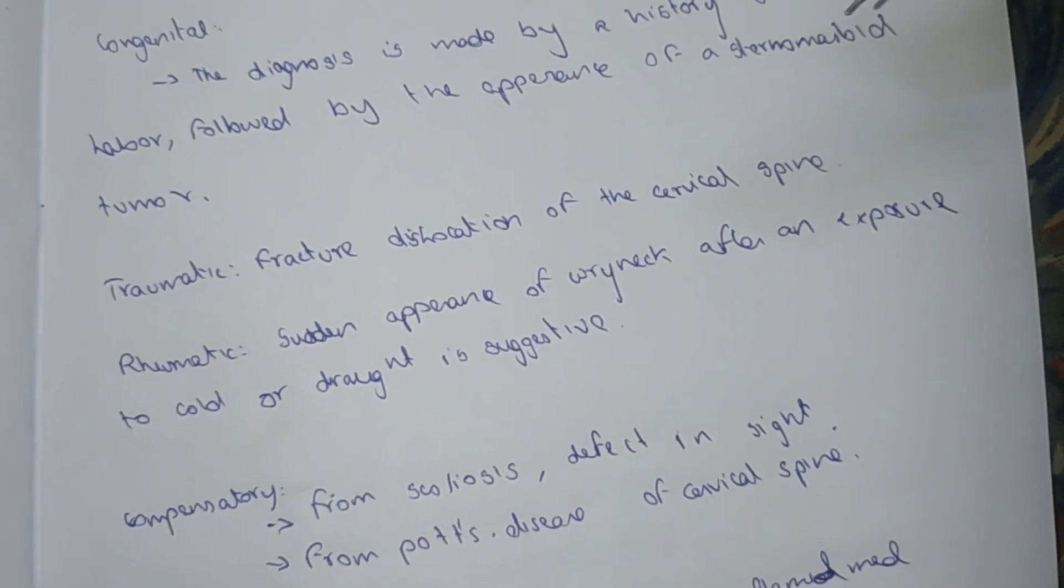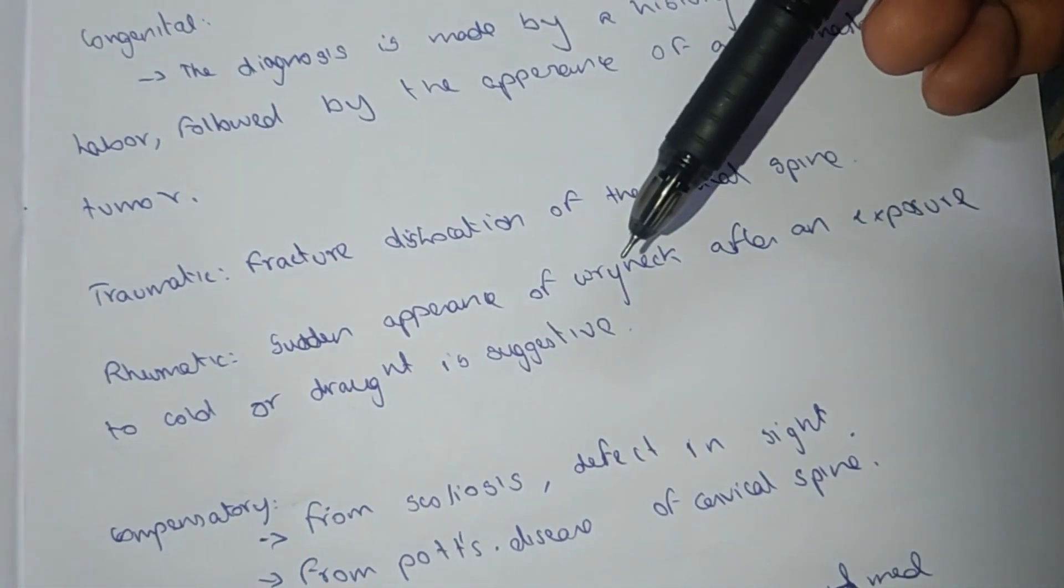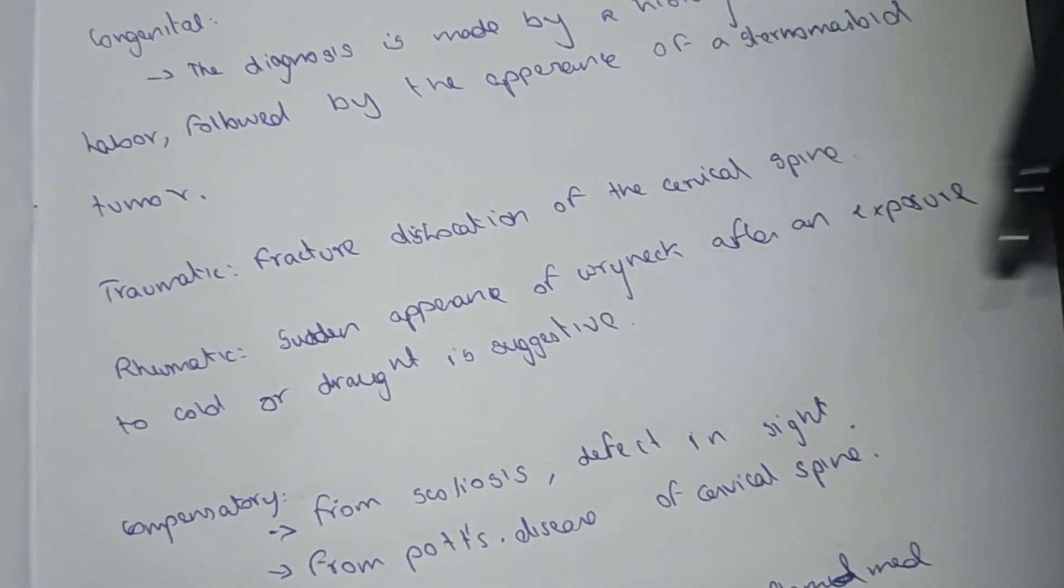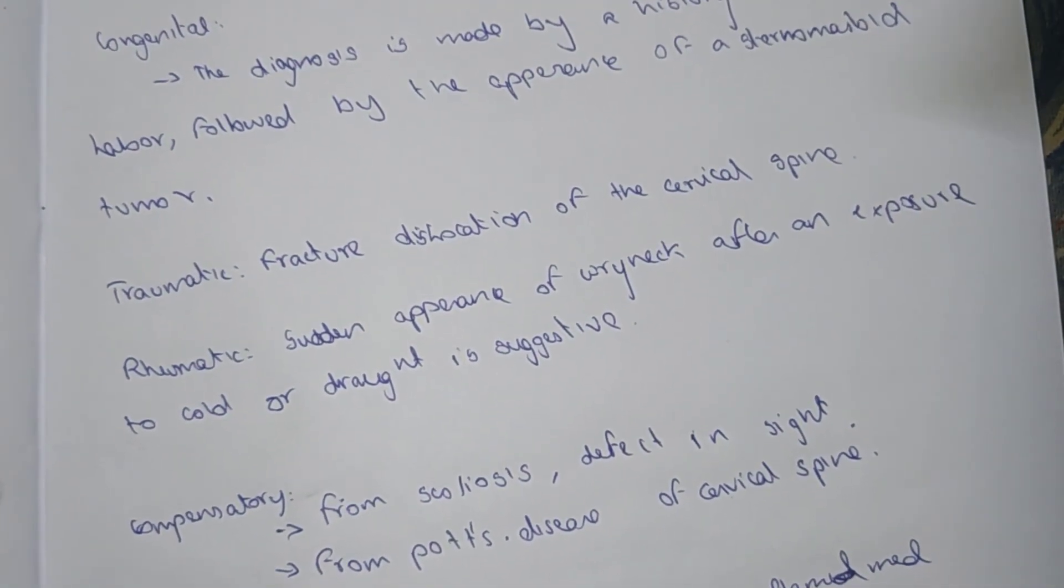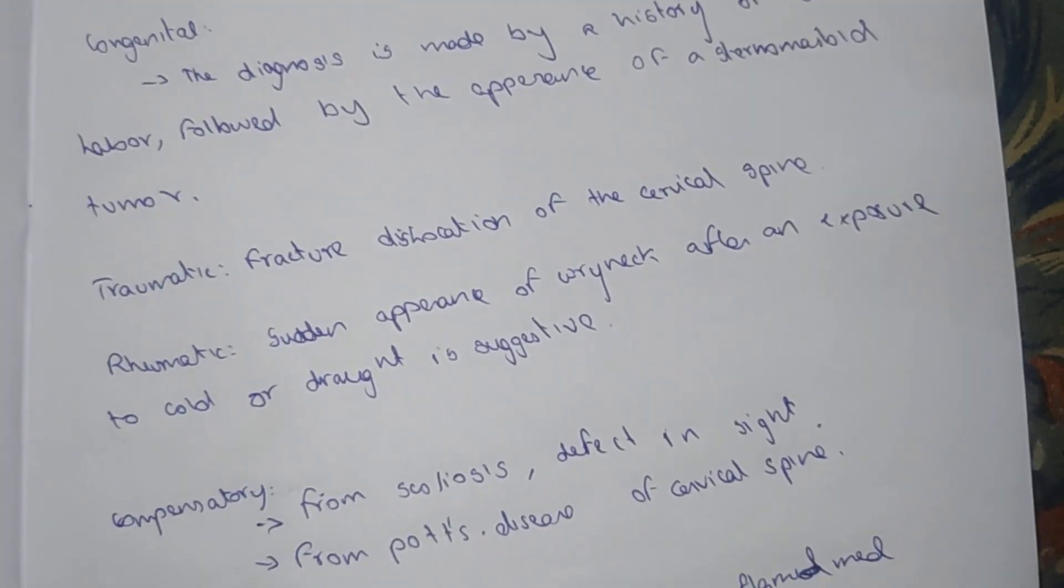Traumatic includes fracture dislocation of the cervical spine. Rheumatic type shows sudden appearance of wry neck after exposure to cold or draft.